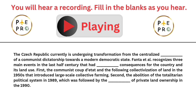The Czech Republic is currently undergoing transformation from the centralised regime of a communist dictatorship towards a modern democratic state. Fanta et al. recognizes three main events in the last half century that had profound consequences for the country and its land use. First, the communist coup d'état and the following collectivization of land in the 1950s, which introduced large-scale collective farming.